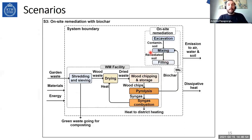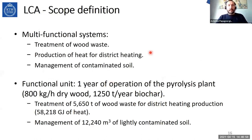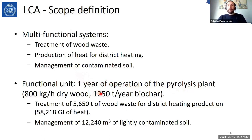For the life cycle assessment scope, we are dealing with multifunctional systems that treat wood waste, produce heat, and manage contaminated soil. The functional unit is one year of operation of the pyrolysis plant, treating 800 kilograms per hour of dry wood to produce 1,250 tons of biochar per year — equal to treatment of 5,650 tons of wood waste for district heating production and the management of almost 12,000 cubic meters of contaminated soil.